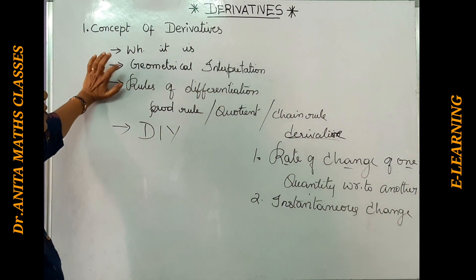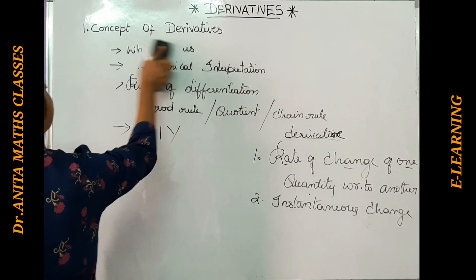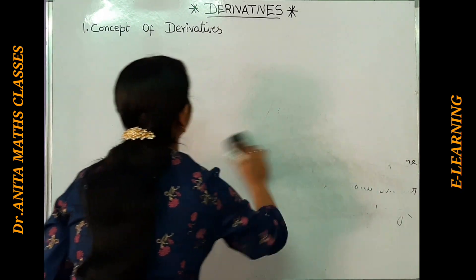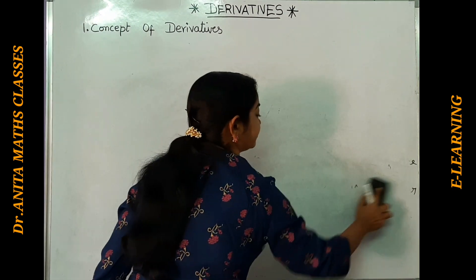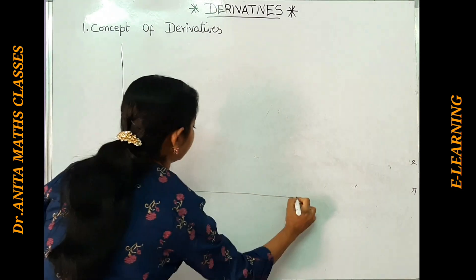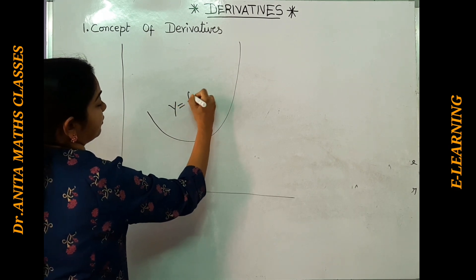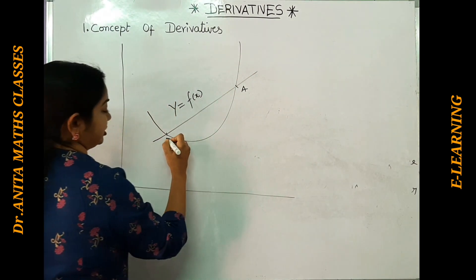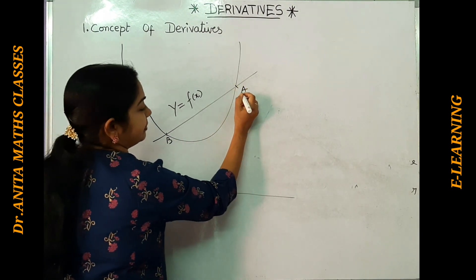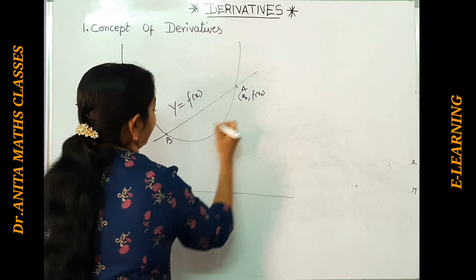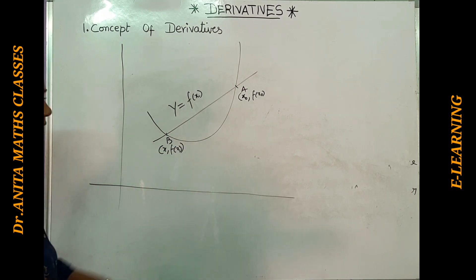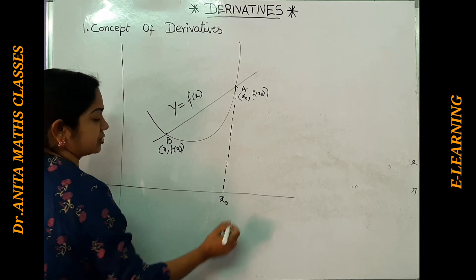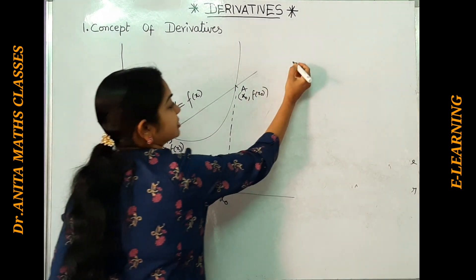Now we'll go to the geometrical interpretation of derivatives. Using a graph, I'll explain it. Taking x and y axes with the curve y = f(x), let me draw a secant touching the curve at two points. Suppose one point is (x₀, f(x₀)) and the other is (x, f(x)).